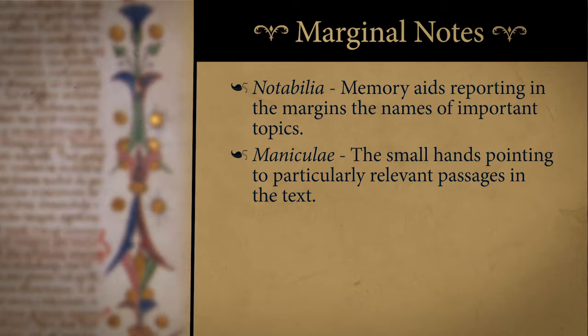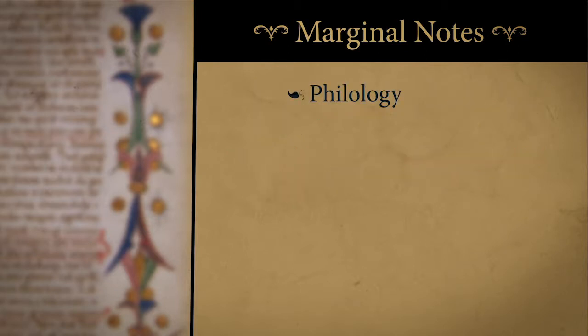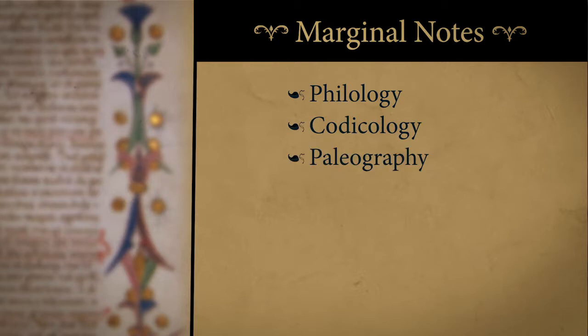I want to emphasize the need to have philology, codicology, and paleography collaborate when working on a critical edition. All these marginal elements must be studied using the tools of these three sister disciplines. The information relegated in the margins of a manuscript can often prove as important as that in the body of the text, if not more.